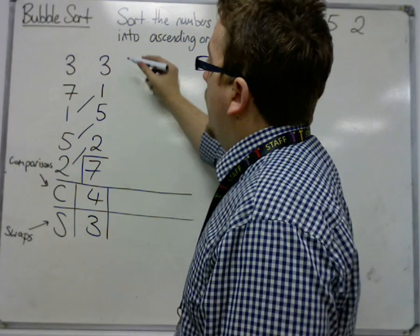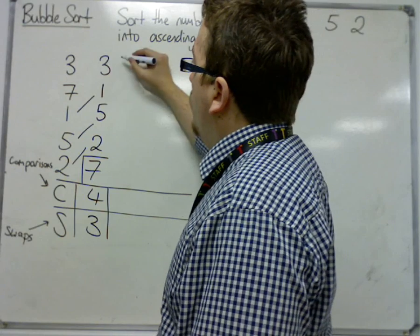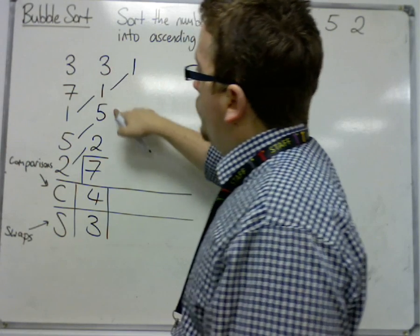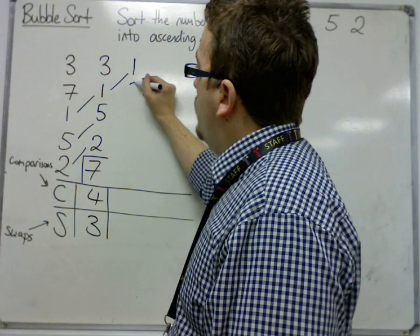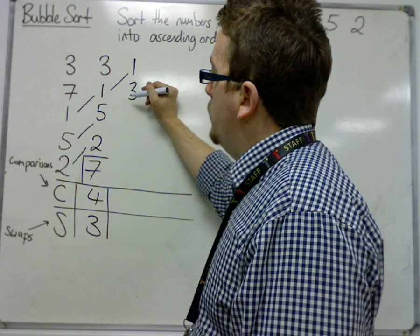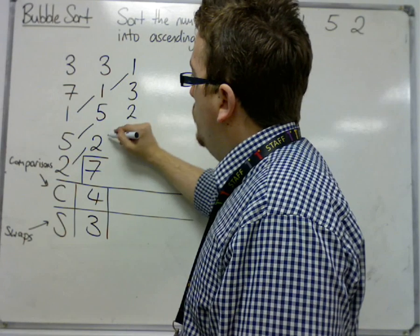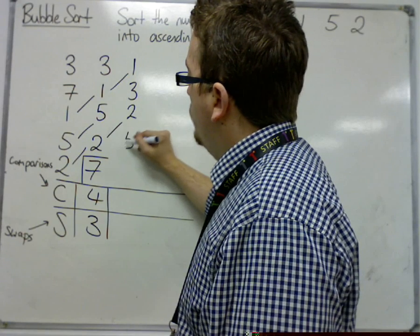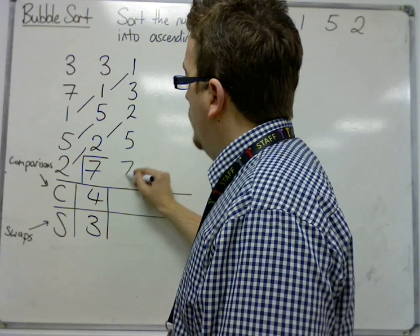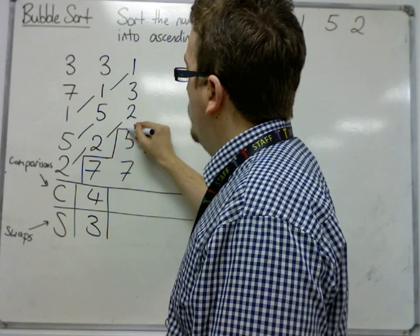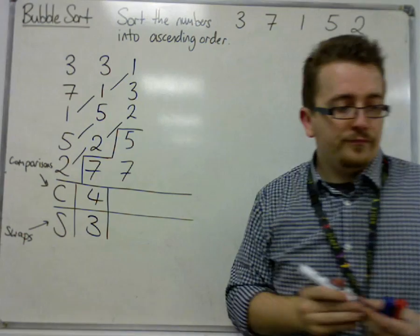So now we're looking at 3 and 1. Well, they're in the wrong order, so 1 must be swapped. Then 3 and 5, well, they're in the correct order, so we write down the smaller of the 2. 5 and 2, they need to be swapped, so the 2 must be swapped and the 5 has dropped to the bottom. We must continue to write in the 7. And because 5 has dropped to the bottom, we can now box it off.